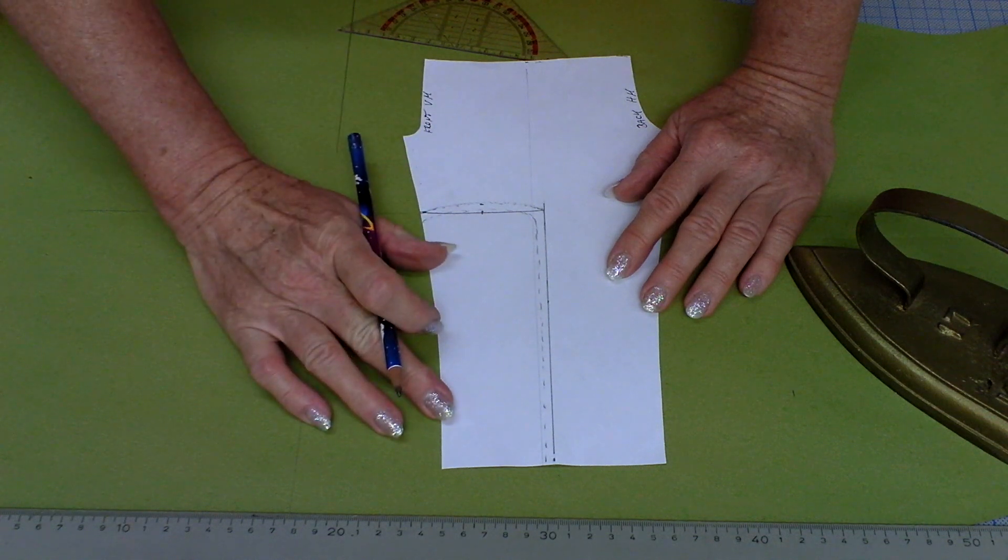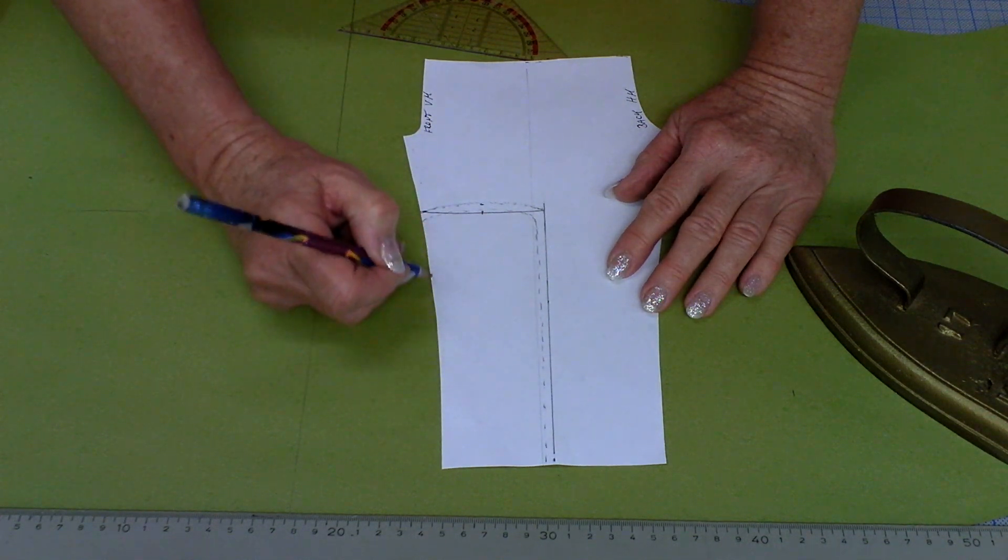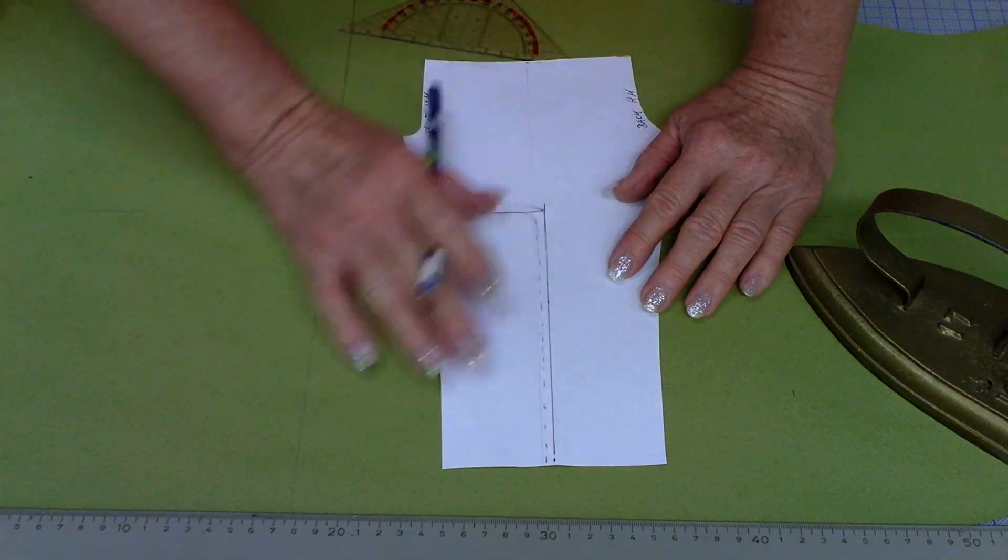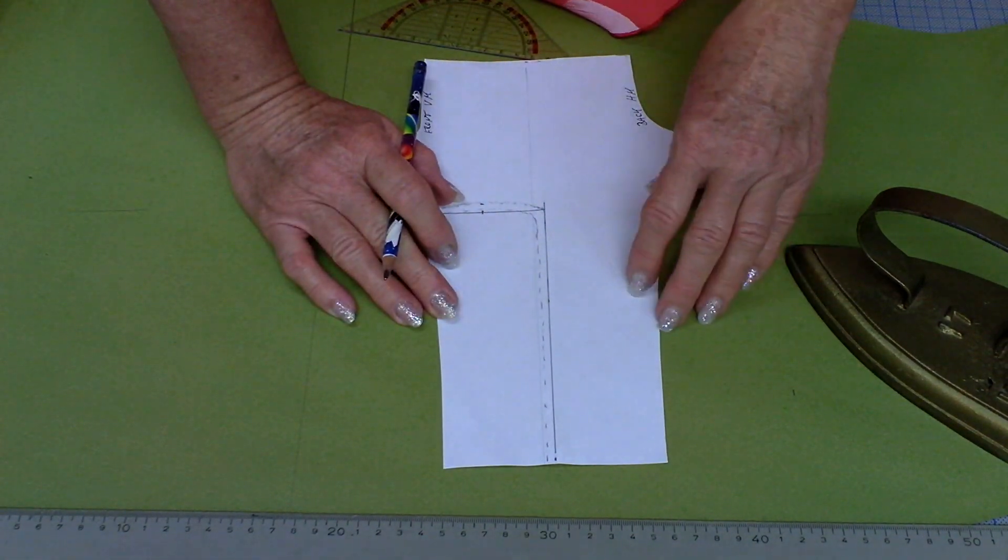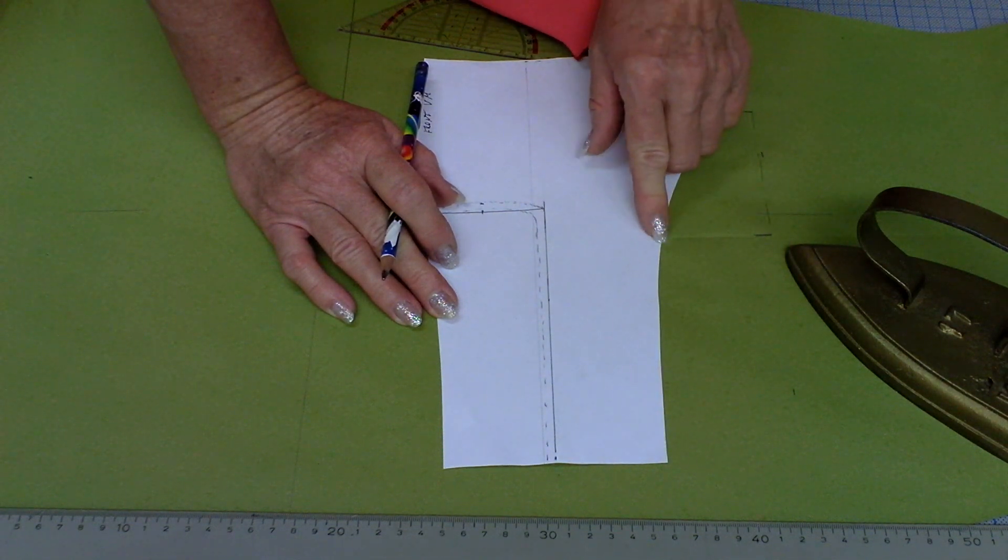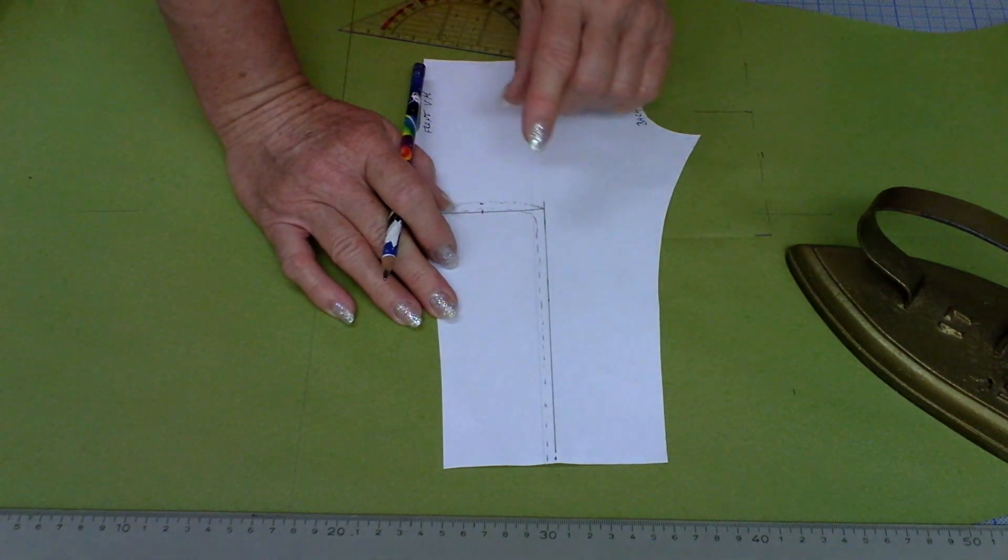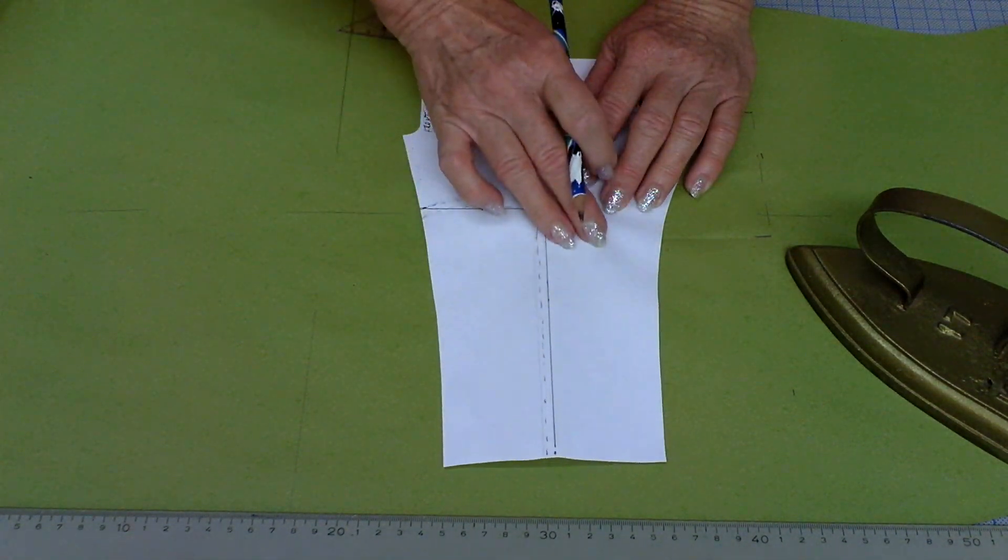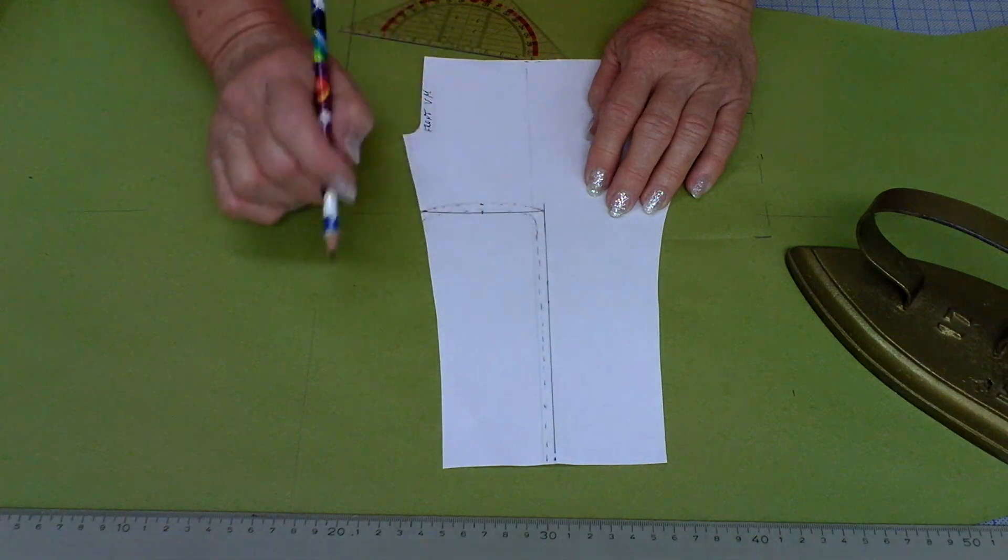Now before I cut it out I will add in this part already my seam allowance of one centimeter which I always suggest to do. Here I don't need to worry about the existing seam allowance, but as this part is falling out we don't need to worry about it.